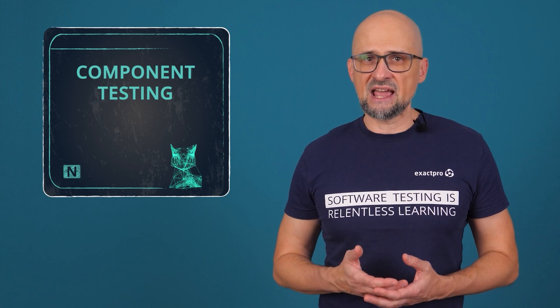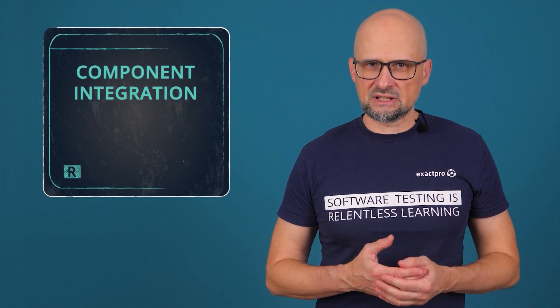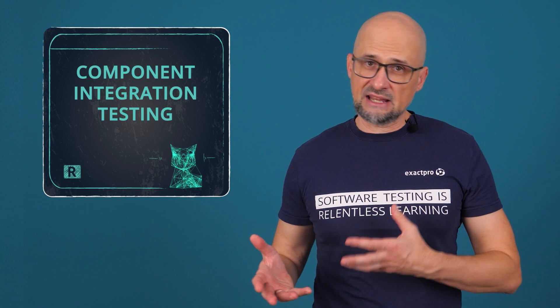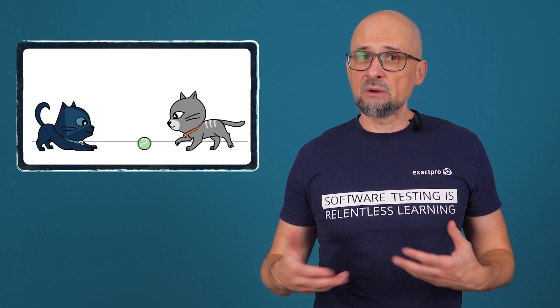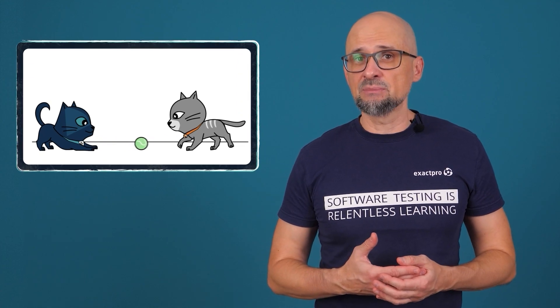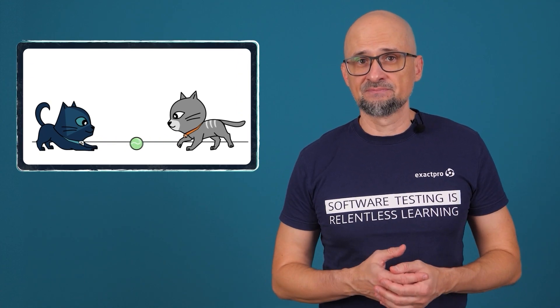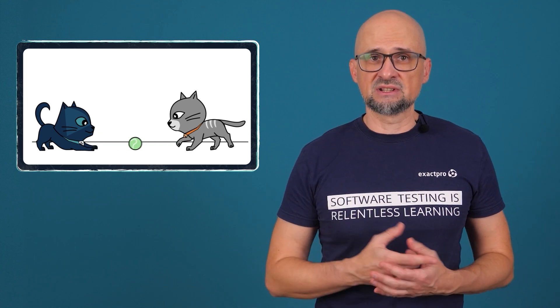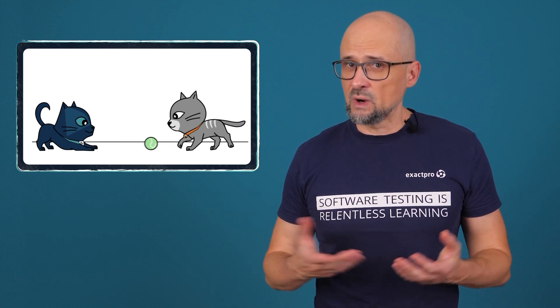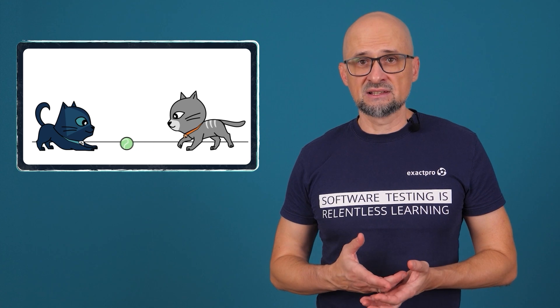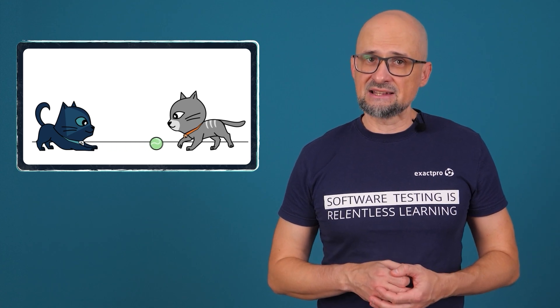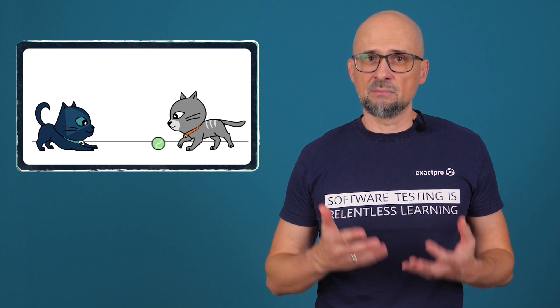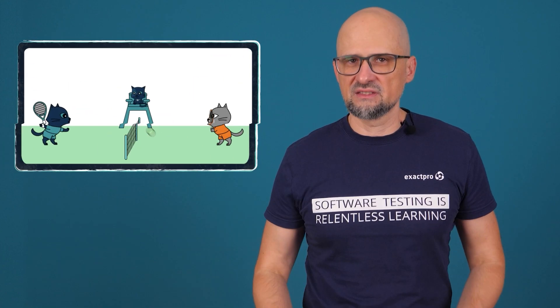After that comes component testing for any non-model components, such as user interfaces and communication components. Then there is component integration testing that ensures that AI and non-AI system components interact correctly. Here we make sure that the data pipeline inputs function as expected, and that the model predictions are exchanged with the relevant system components. Where AI is provided as a service, it is normal to perform API testing of the provided service as part of component integration testing.